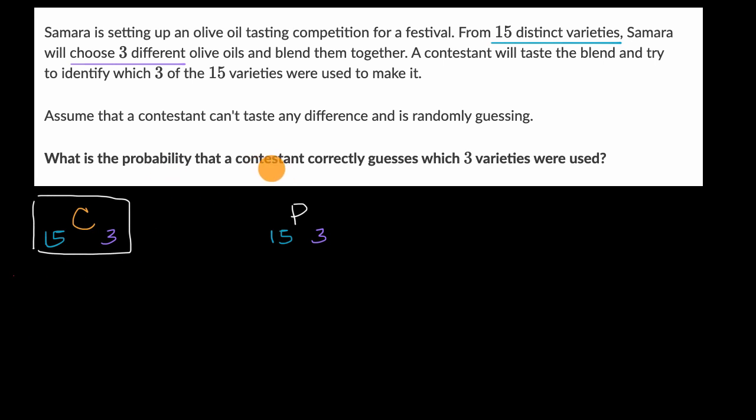And so what's the probability that the contestant correctly guesses which three varieties were used? Well, the contestant is going to be guessing one out of the possible number of scenarios here. So the probability would be one over 15 choose three.